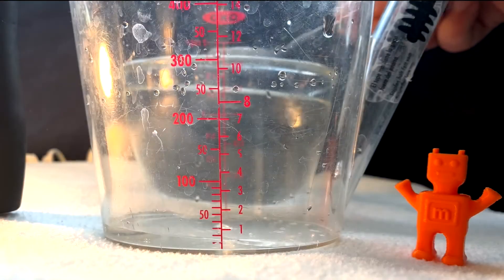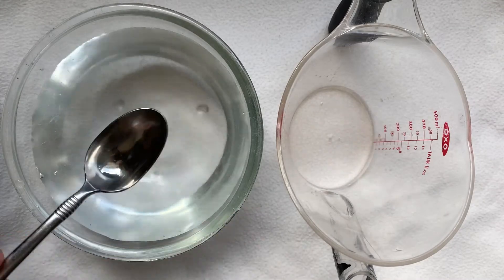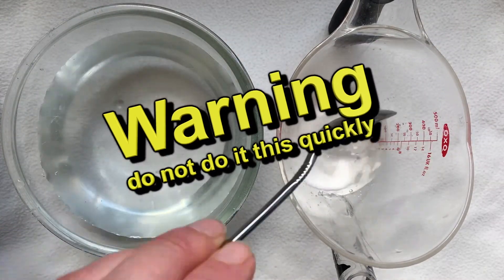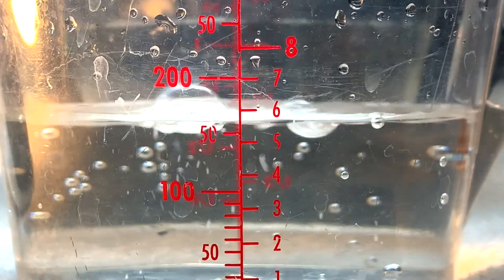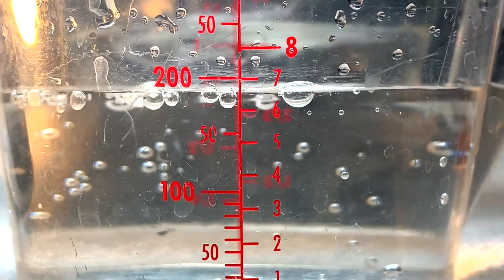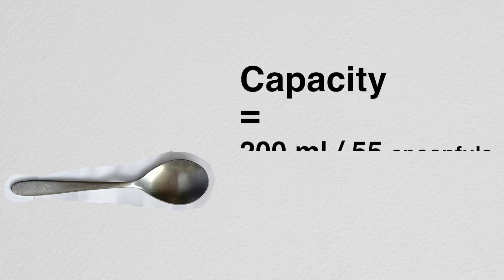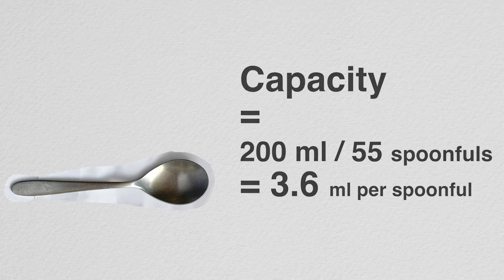Don't worry if the water level is a little bit higher than a level teaspoon due to surface tension. With the same teaspoon, add another teaspoon of water into the measuring jug and count 2. Keep adding more teaspoons of water, counting them, until the water in the measuring jug is up to the 200 millilitre mark. Calculate your spoon's capacity by dividing 200 millilitres by the number of spoonfuls you counted — 200 millilitres divided by this number gives the capacity.